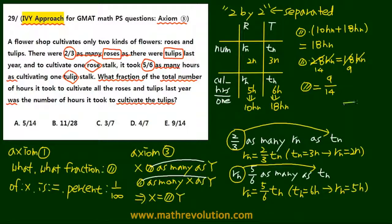So our answer for this question is choice E, 9/14. Remember the axioms and the 2x2 table. Make sure you remember how we solve this problem using the IV approach.